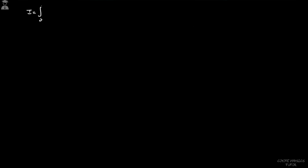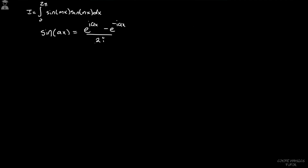In this video, we're going to be evaluating the same integral: I equals the integral from 0 to 2π of sine(mx) times sine(nx) dx. But instead of using trig identities, we're actually going to be using the complex exponential form of the sine function. In case you're not familiar, sine of ax equals e to the iax minus e to the negative iax, all divided by 2i. We're going to use this substitution for our integrand.